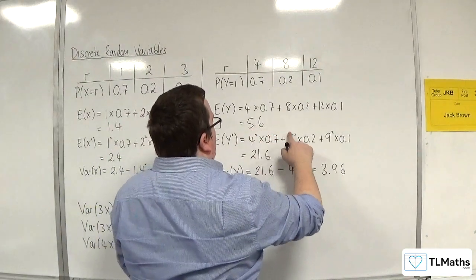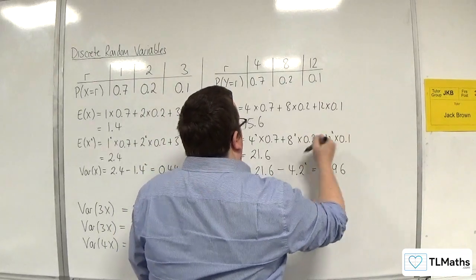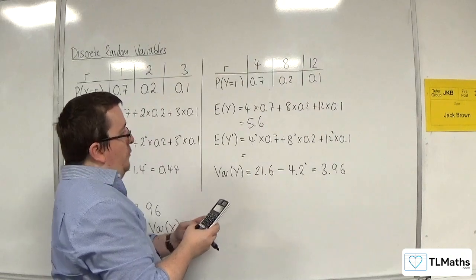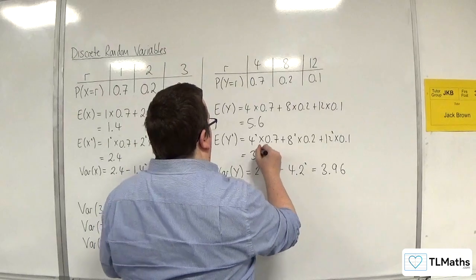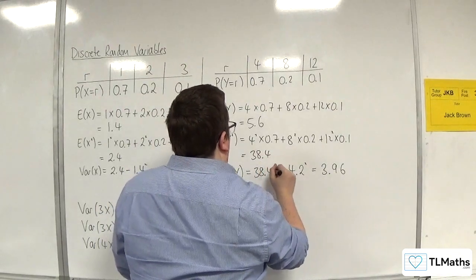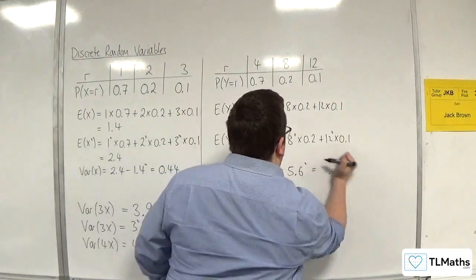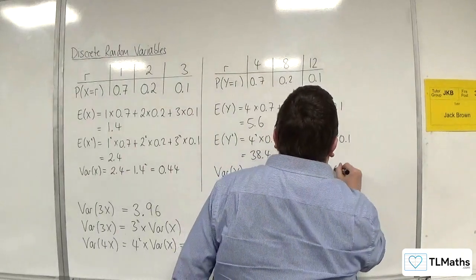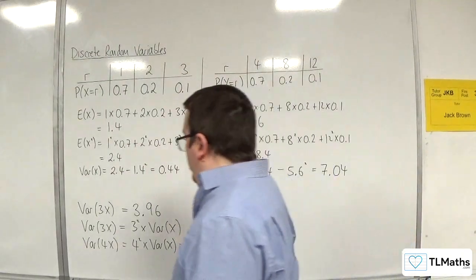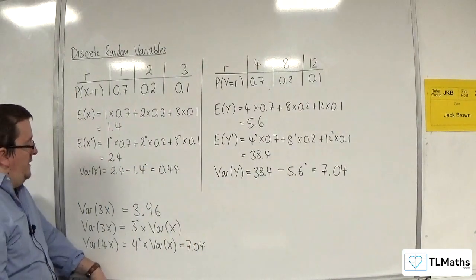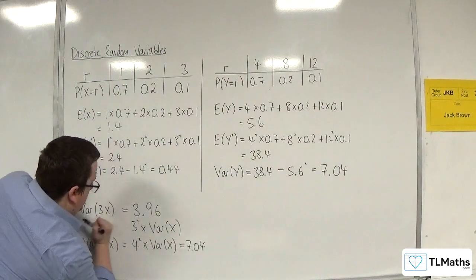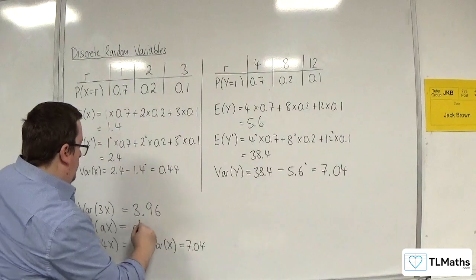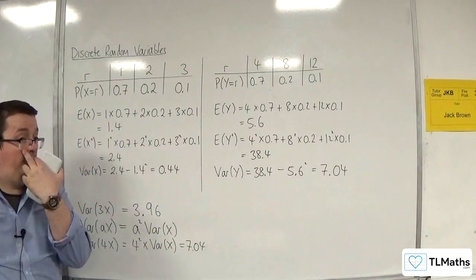So then we've got 4 squared, 8 squared, 12 squared. So 16 lots of 0.7 plus 64 lots of 0.2 plus 144 lots of 0.1, and we're getting 38.4. So 38.4, take away 5.6 squared, and we get 7.04, as predicted. So that is telling us that var of ax is looking like a squared times var of x. So we appear to be having this rule here.